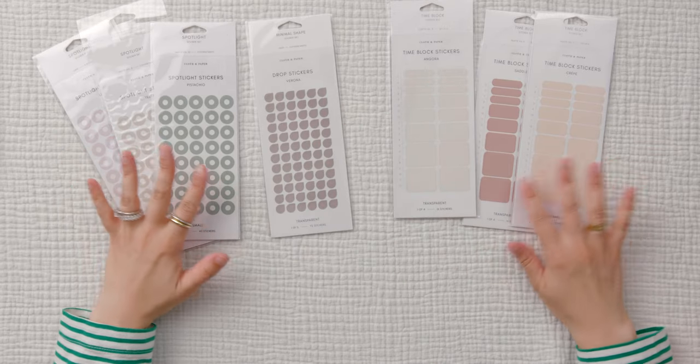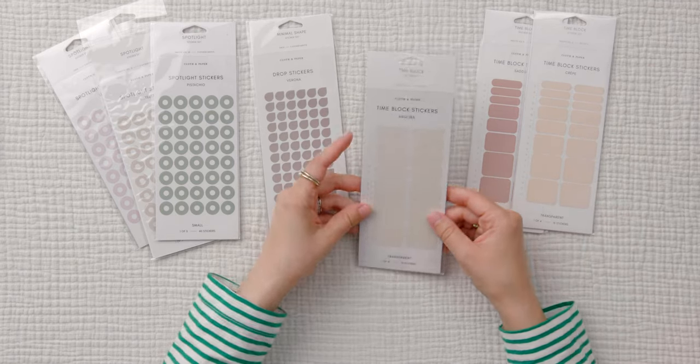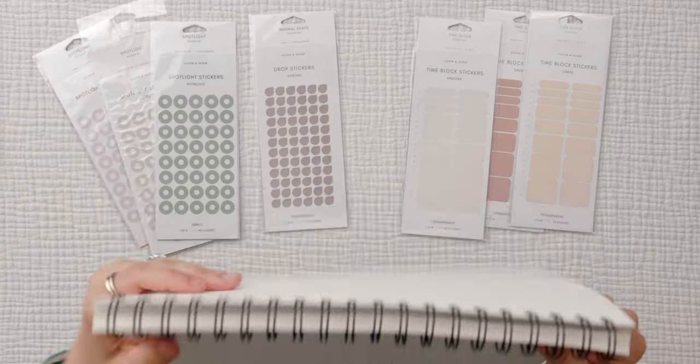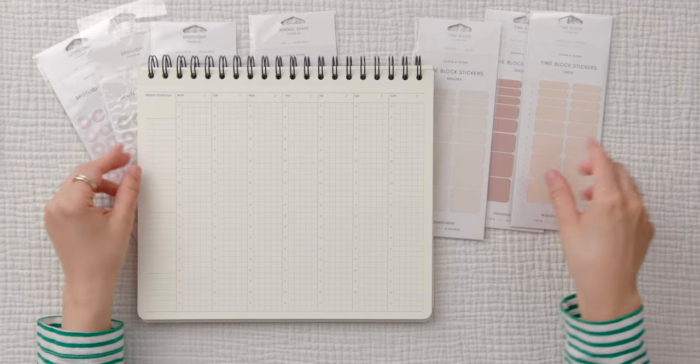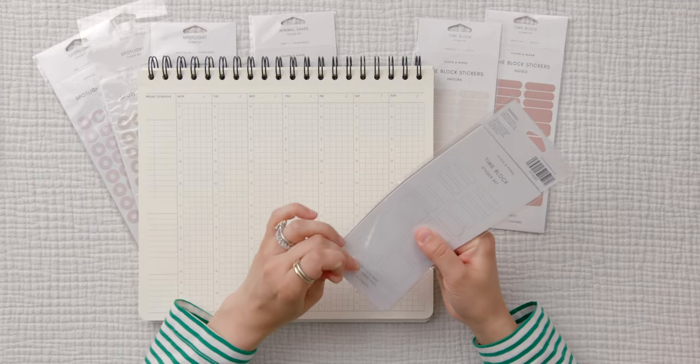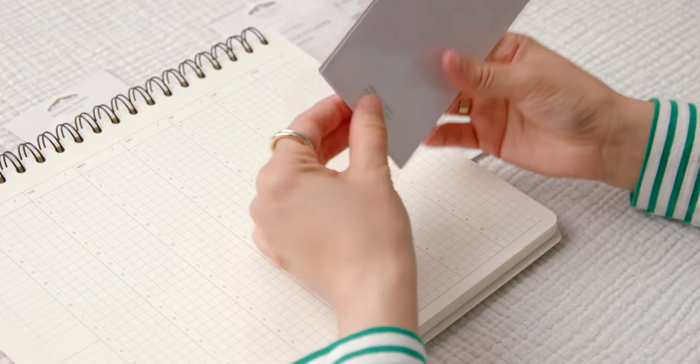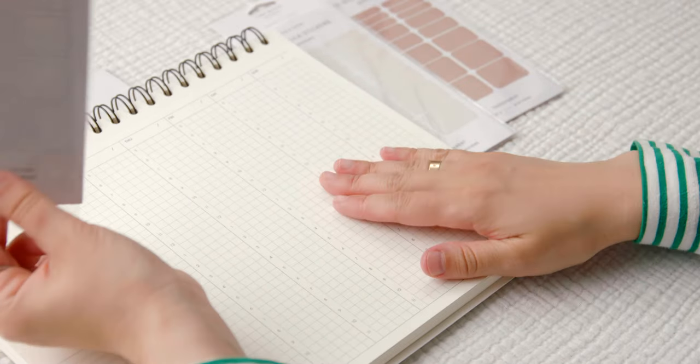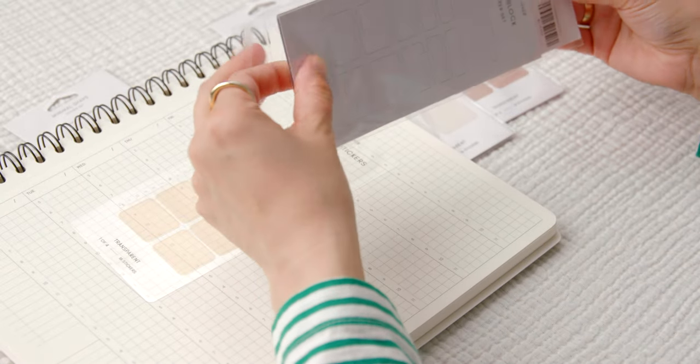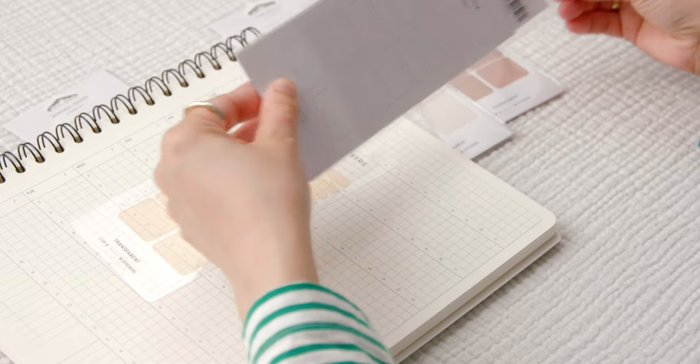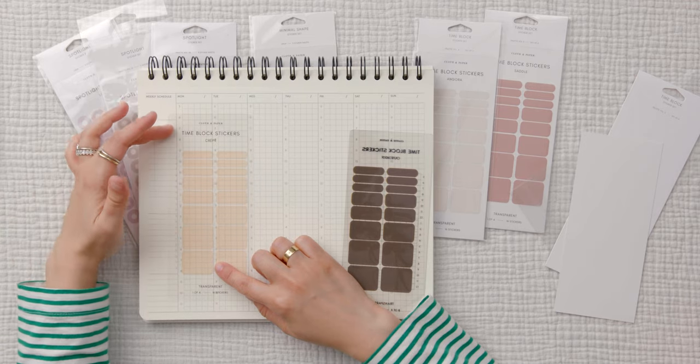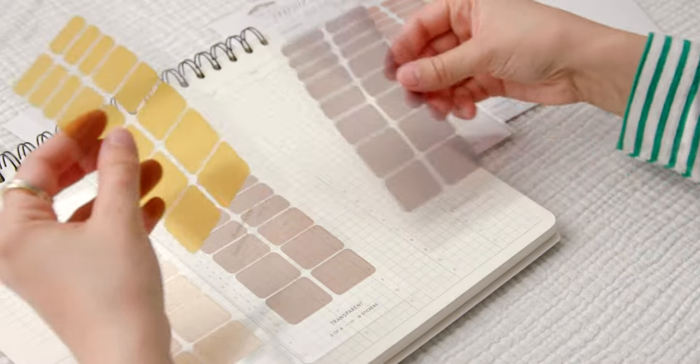So these are time blocking stickers. These are going to fit in the cloth and paper time blocking notebook that came in I can't remember which subscription box, but I bought a bunch of these because I just wanted to stock up. I do have plans on using this weekly schedule for next year. Each pack comes with different colors. This first one, the stickers have the same width of the columns.